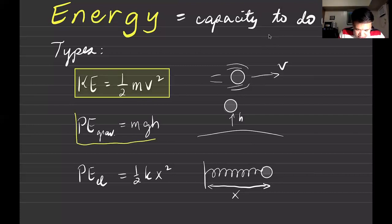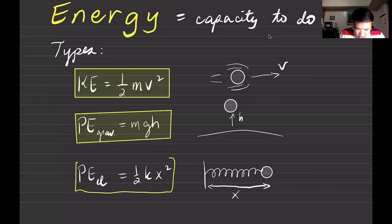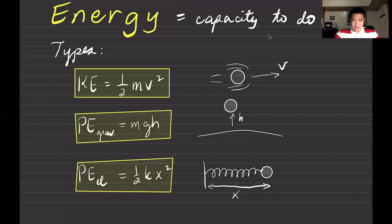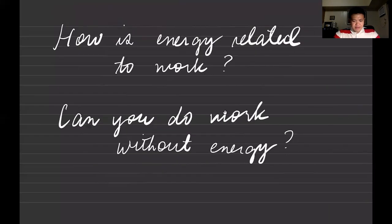So these are your basic types of energy: kinetic energy, which is energy due to motion; gravitational potential energy; and elastic potential energy, which is energy due to position. Now how is energy related to work?